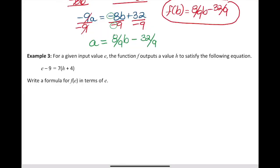For this last example, it says: for a given input value e, the function f outputs a value h to satisfy the following equation. These are so confusing the way they're worded. If you break it up, this is calling for the input value, and this is the output value. You can let your eyes glaze over for the rest. I don't blame you for getting confused with the way some algebra problems are worded. It's not my fault.